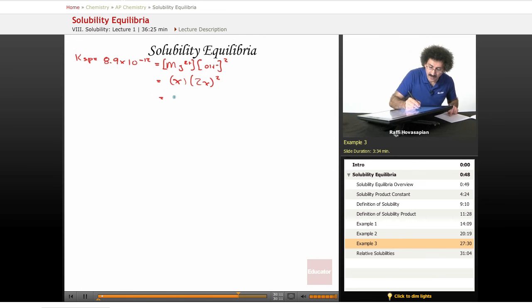Equals x times 4x squared equals 4x cubed. So we have 4x cubed equals 8.9 times 10 to the negative 12. When we divide by 4 and take the cube root, we end up with 1.3 times 10 to the negative 4.